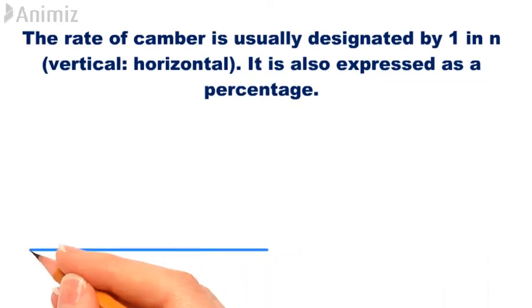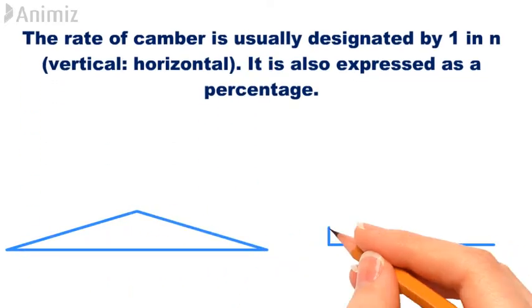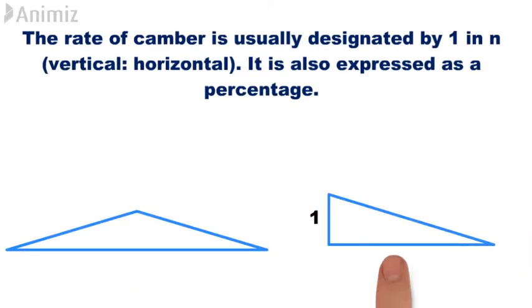The rate of camber is usually designated by 1 in N, where N represents the horizontal distance and 1 represents the vertical rise. It is also expressed as a percentage.